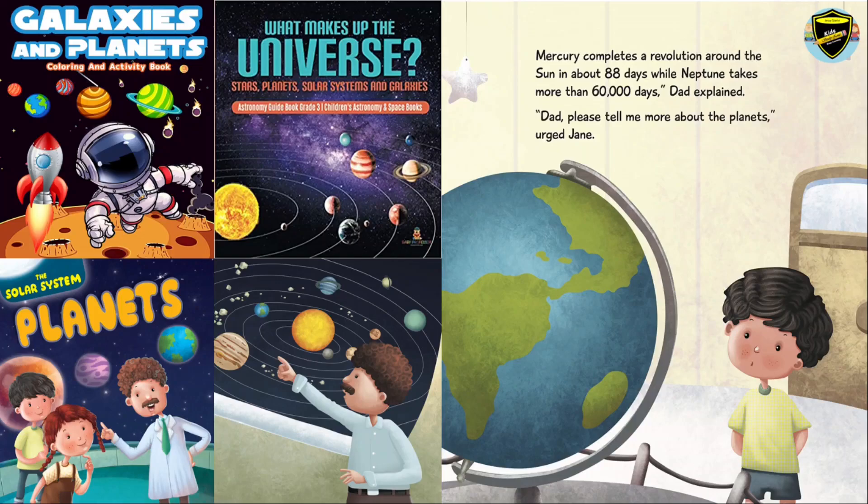Do you know, Mercury completes a revolution around the Sun in about 88 days, while Neptune takes more than 60,000 days.